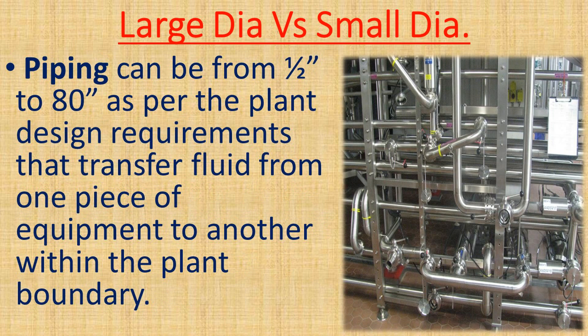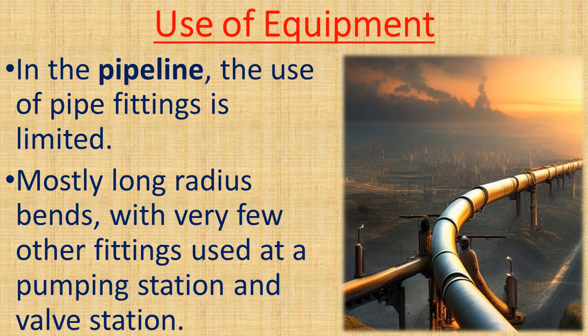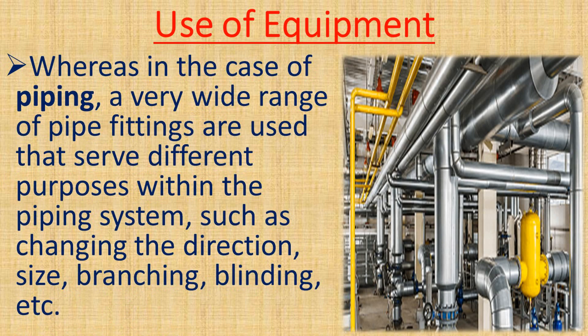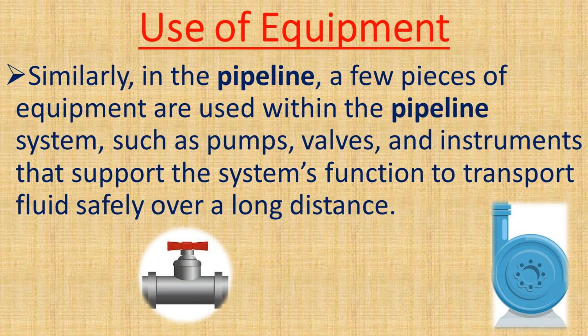In a pipeline, the use of pipe fittings is limited — mostly long radius bends with very few other fittings used at pumping stations and valve stations. In the case of piping, a very wide range of pipe fittings are used that serve different purposes, such as changing direction, size, branching, blinding, etc.